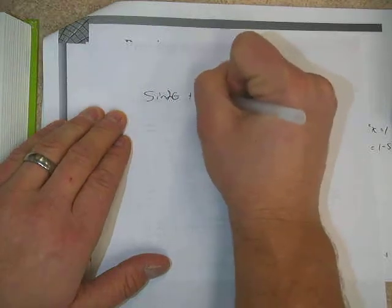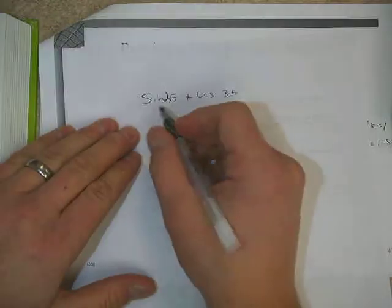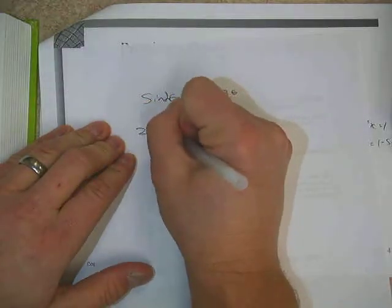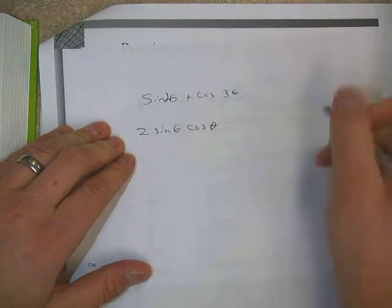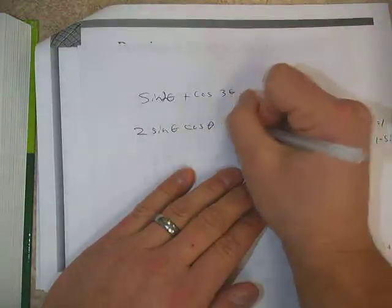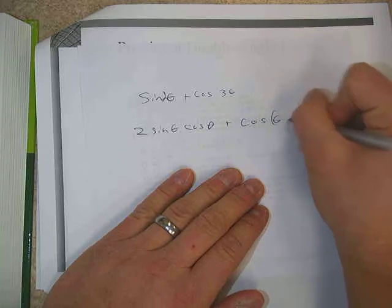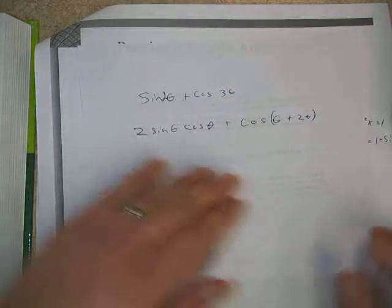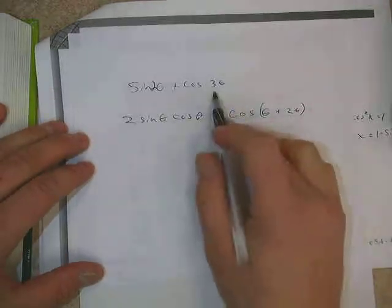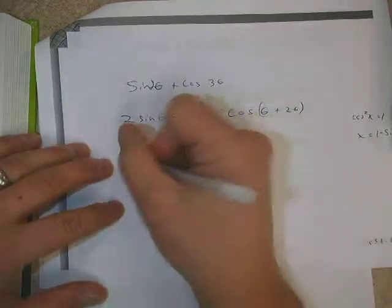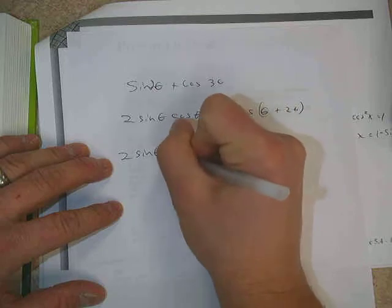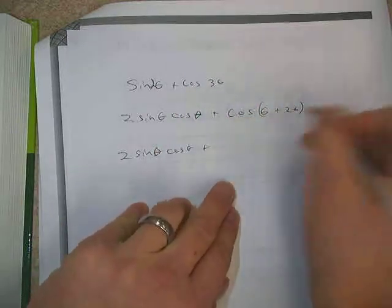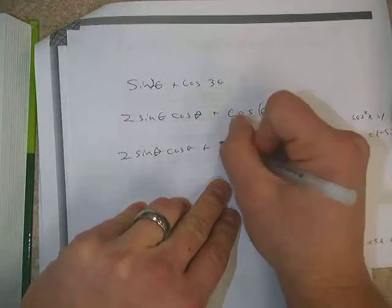Looking at number 13, same page, we have sine of 2θ, sine of 2θ plus cosine of 3θ. And the directions here are to write the expression as one involving only sine θ and cosine θ. So we want to ultimately get rid of the double angle part. So in the sine of 2θ, we really only have one choice. It's 2 sine θ cosine θ. So we're good there. But then with the cosine of 3θ, the first step here would be to write it as cosine of θ plus 2θ. Because 3θ is θ plus 2θ. So if we write 2 sine θ cosine θ.